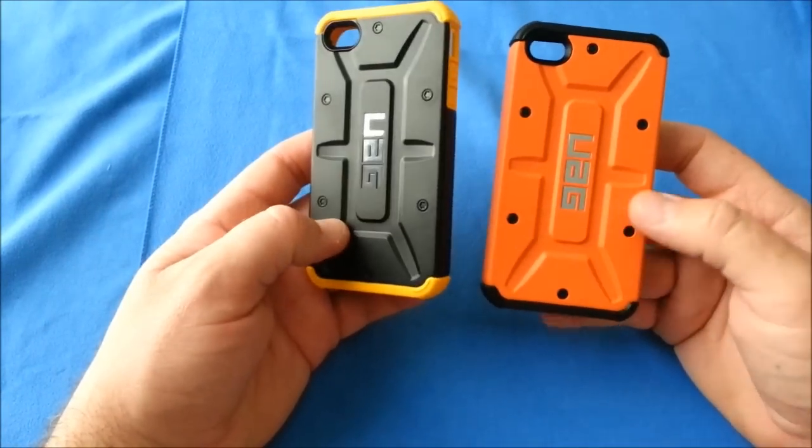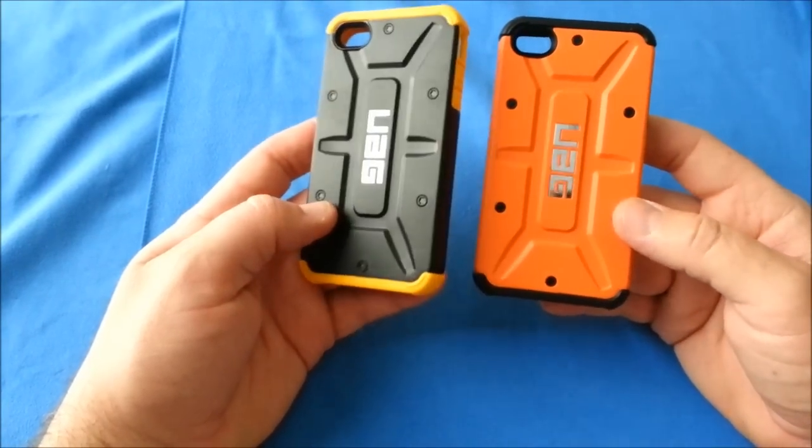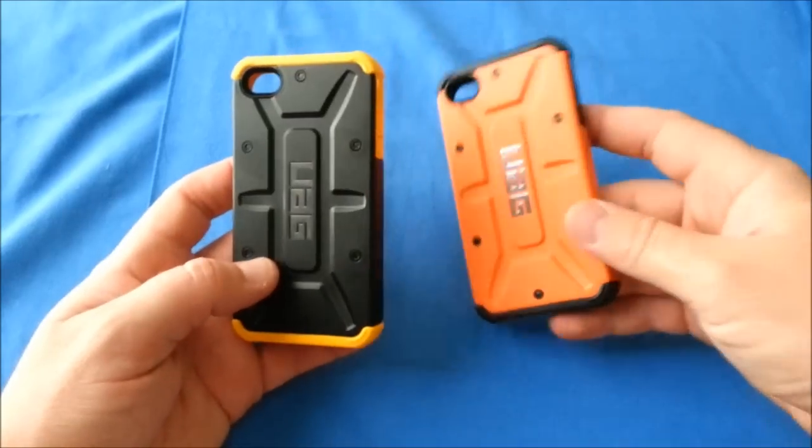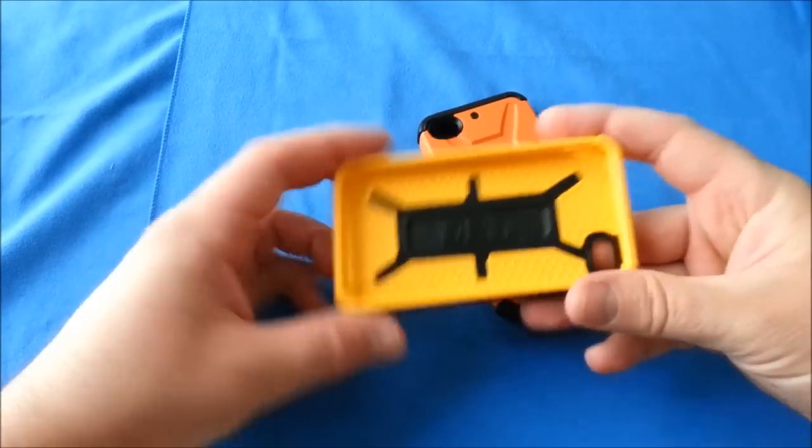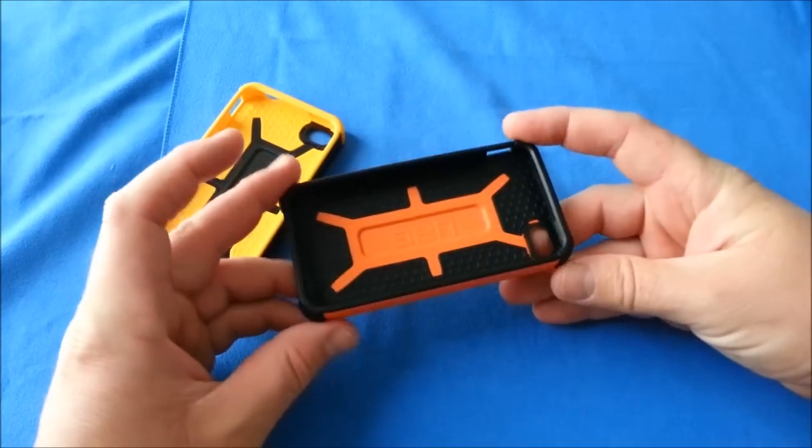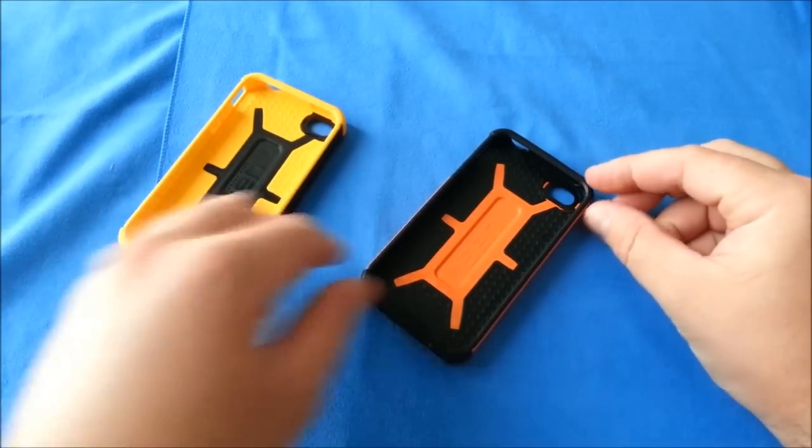So they're not going to show fingerprints or scuffs nearly as easily as, say, a high gloss finish or anything like that. Now, all four corners actually have some reinforced material. So if you do drop your phone on any one of the four corners, you are protected.